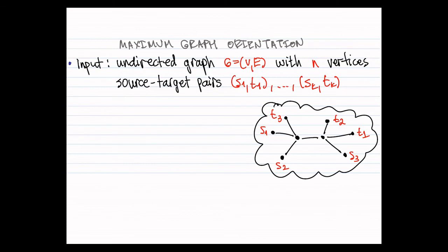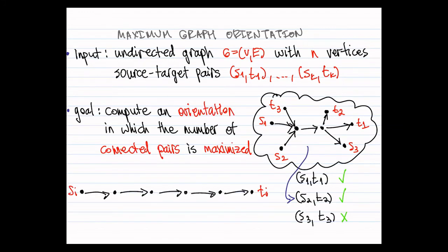So to put this problem more formally, we call this problem a maximum graph orientation or MGO. So the input is an undirected graph and a list of source target pairs. These represent the knockout effect and the goal is to compute an orientation of the network that is to choose a direction for each one of the edges so that the maximum number of source target pairs have a directed path going from the source to the target.